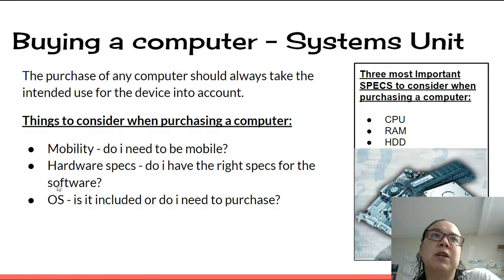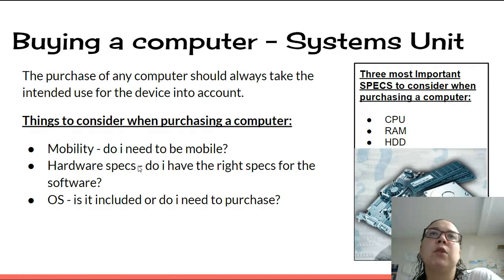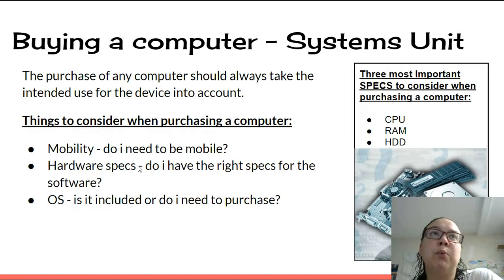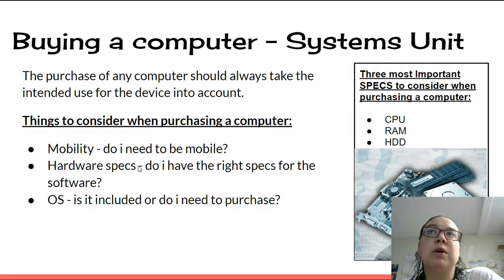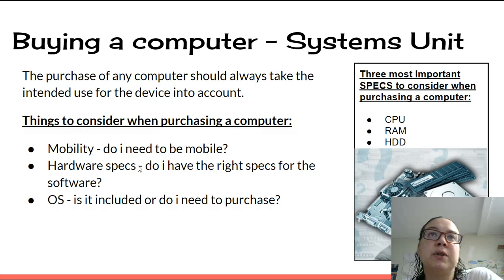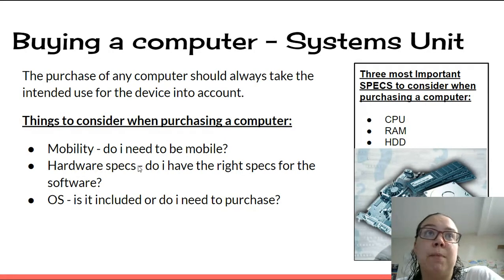Hardware specs: do I have the right specs for the software? When you buy any software, they will give you minimum recommendations for the hardware in order for the software to work. For example, if you buy a computer game, you might need a certain type of graphics card — minimum specs for that game to work — a certain type of CPU, and a minimum amount of RAM.